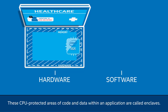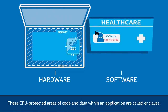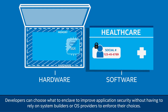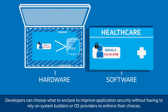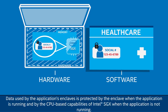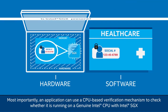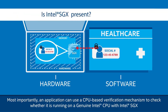These CPU-protected areas of code and data within an application are called enclaves. Developers can choose what to enclave to improve application security without having to rely on system builders or OS providers to enforce their choices. Data used by the application's enclaves is protected by the enclave when the application is running, and by the CPU-based capabilities of Intel SGX when the application is not running. Most importantly, an application can use a CPU-based verification mechanism to check whether it is running on a genuine Intel CPU with Intel SGX, and whether its enclaves were set up as intended.